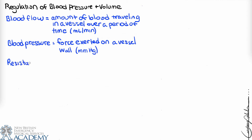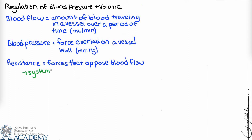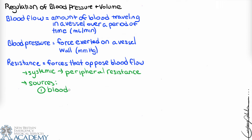Resistance is the opposition to flow — basically a measure of friction. We generally refer to this as systemic or peripheral resistance, since resistance is much higher in the systemic vessels than in the pulmonary vasculature. Sources of resistance include blood viscosity, which refers to the thickness of the blood. Viscosity increases with polycythemia, an overproduction of red blood cells, and decreases with anemia, or not enough red blood cells.